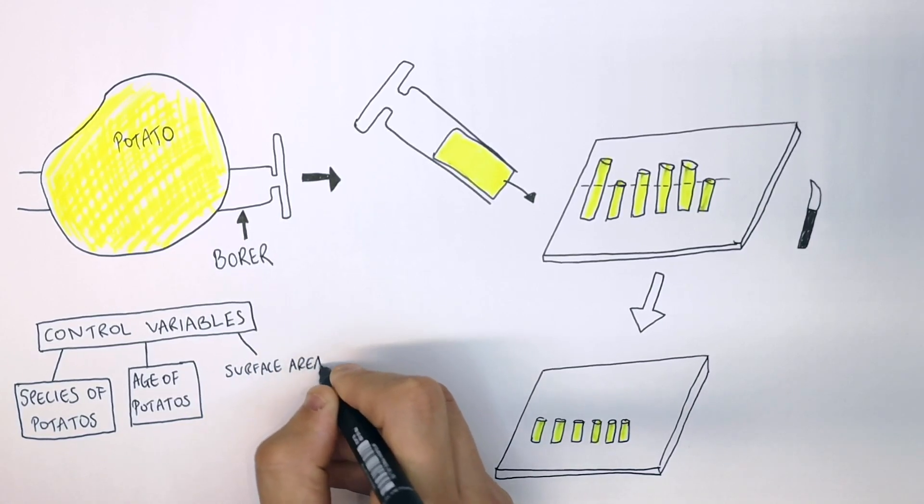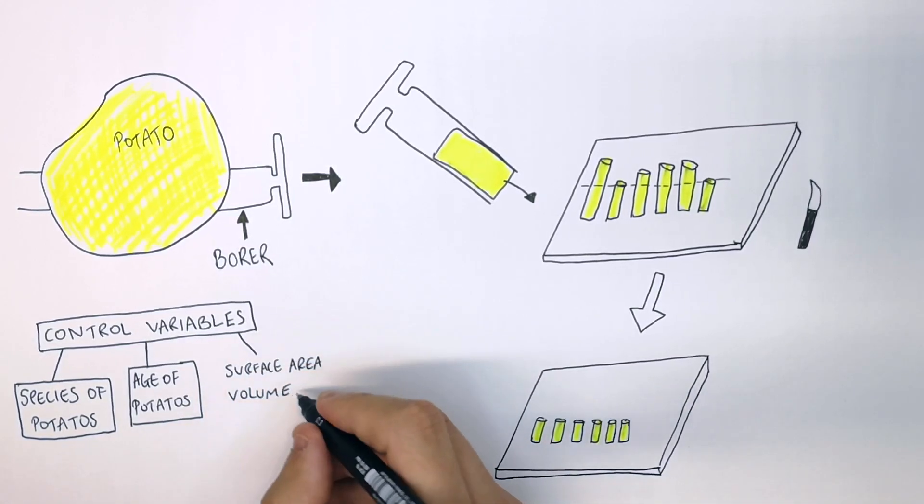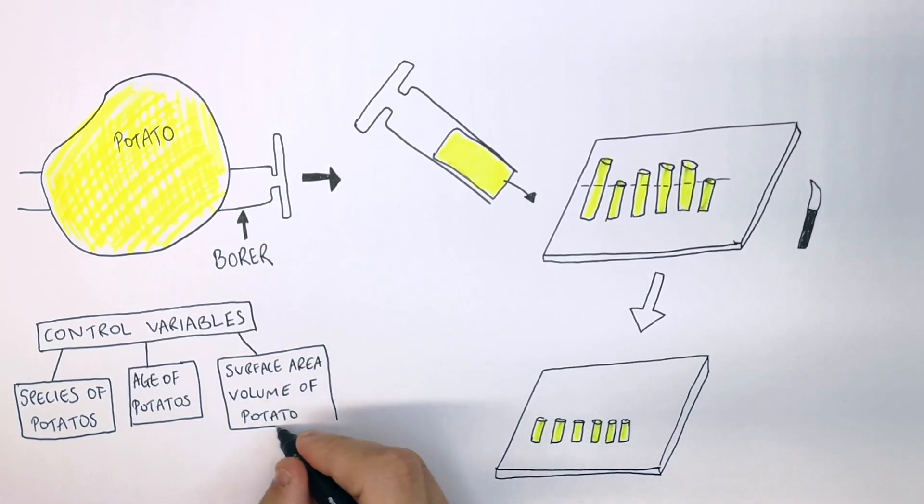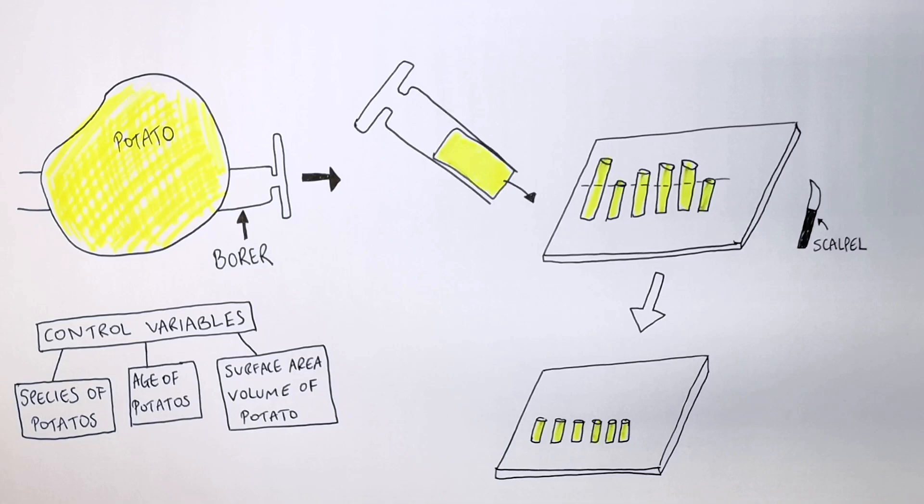And also, the surface area and the volume of the cylinders of the potato must be as close to the same as possible. We use control variables to make sure our results are both reliable and comparable.